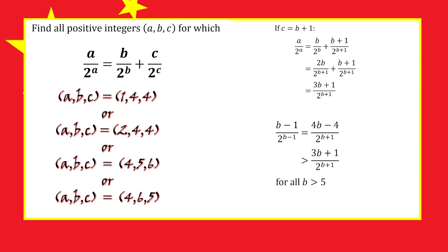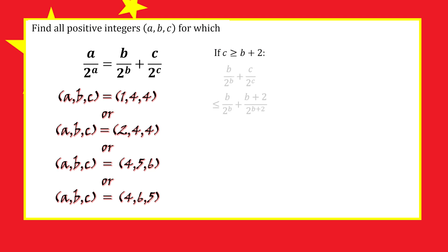If c were b plus 2, b plus 3, or larger, the sum is too small. If c is greater than or equal to b plus 2, the sum is at most 5b plus 2 over 2 to the power of b plus 2.